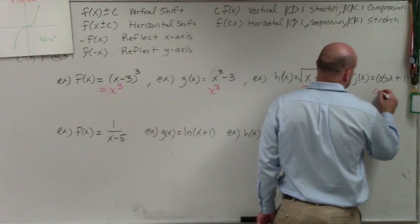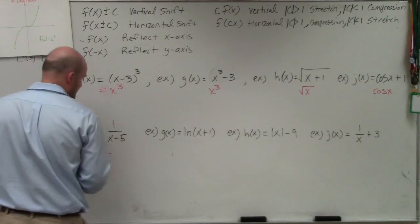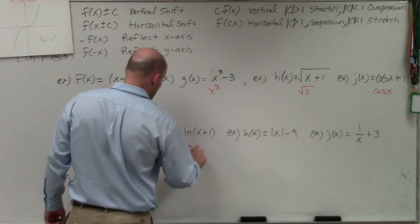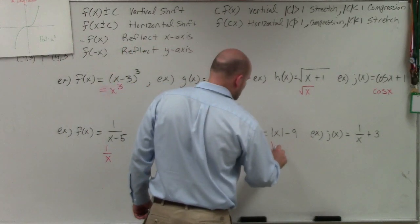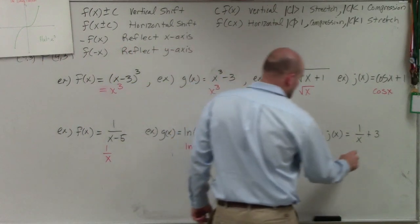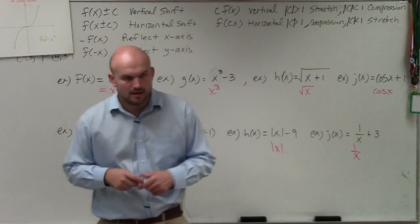Here, cosine of x is my parent function. Here, 1 over x is my function. Here, ln of x is my function. Here, absolute value of x is my function. And here, 1 over x is my function. OK?